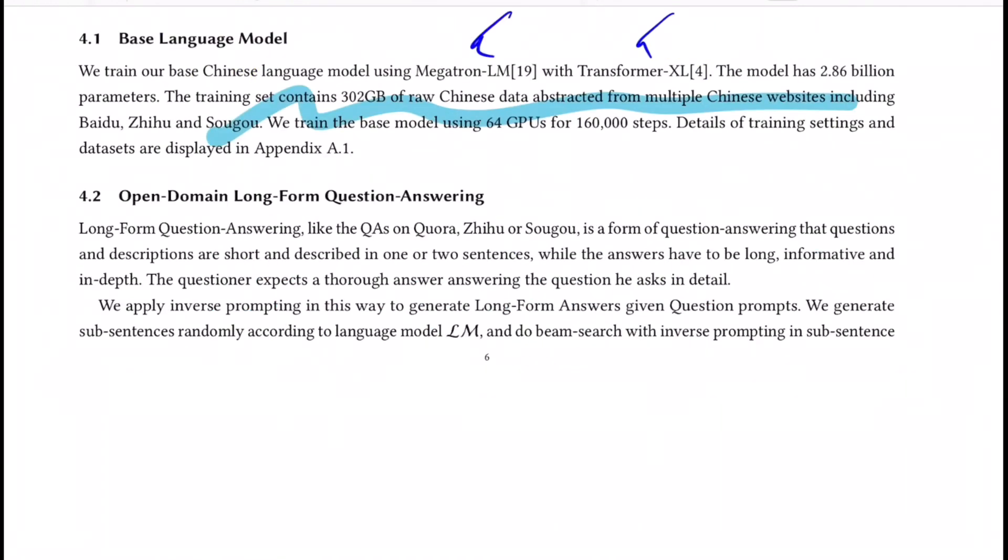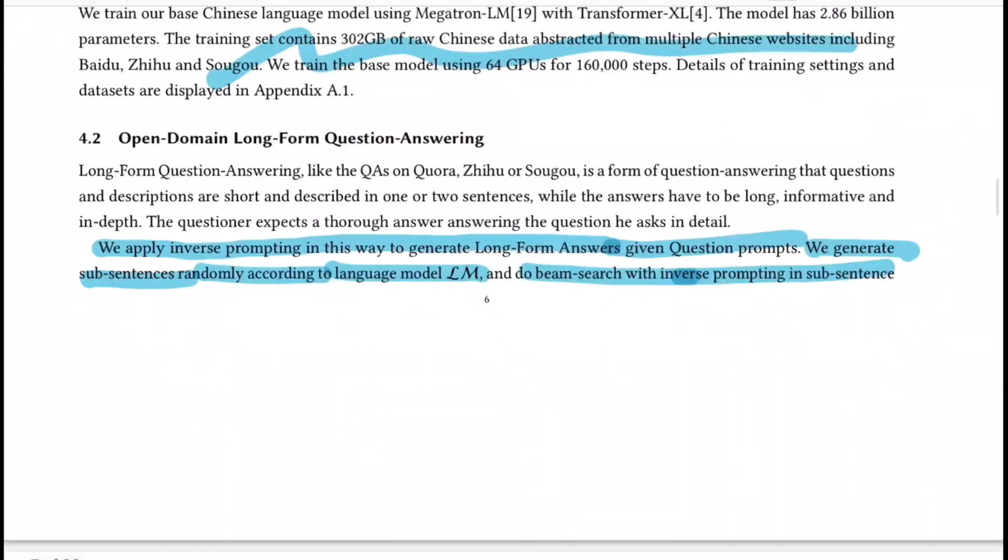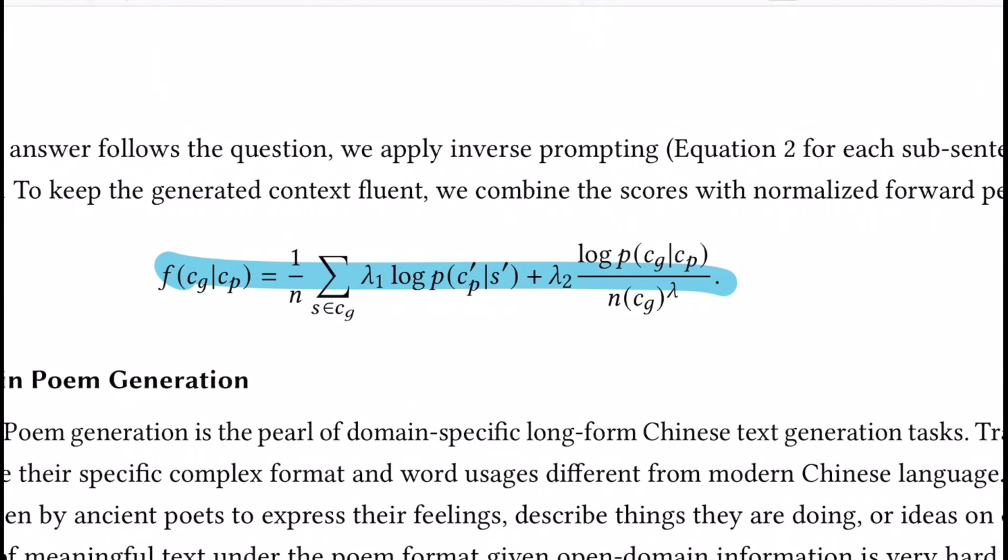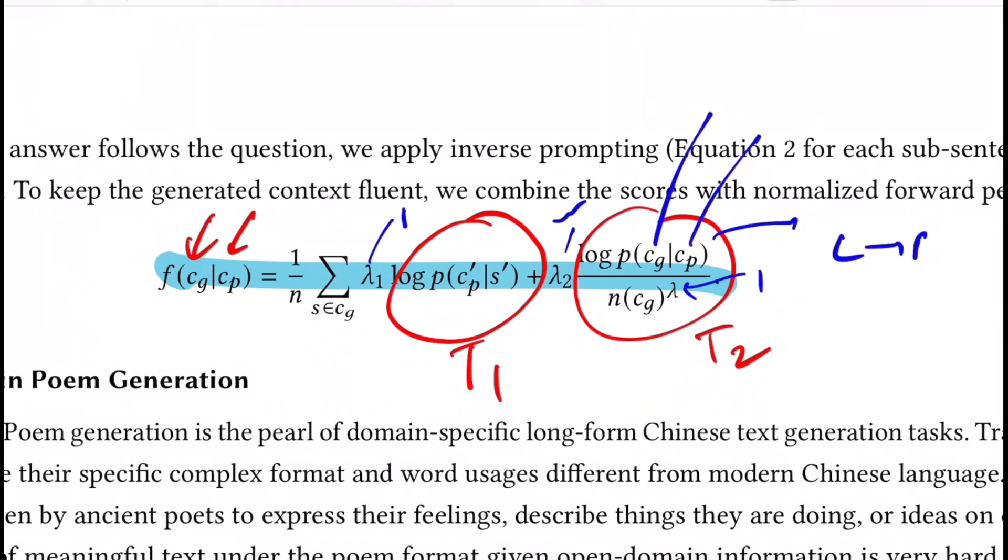For open domain long form question answering, they apply inverse prompting in a way to generate long form answers given the question prompts. They generate sub sentences randomly according to the language model and do beam search with inverse prompting at a sub sentence level. If you see this equation, the entire aim is to generate text given the prompt. The challenge is to generate text that's relevant to the prompt and doesn't digress. For that we have the concept of inverse prompt, which can be seen in this term. Let's call this as t1 and this as t2. All these lambda parameters that you see are fixed by the authors. Lambda is a trade-off between how much weight you want to give to t2 and t1.